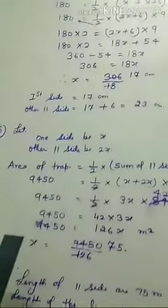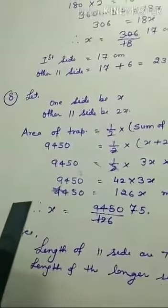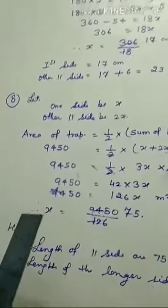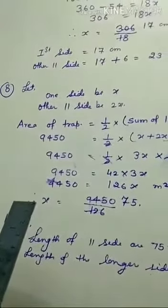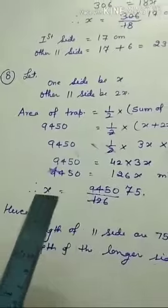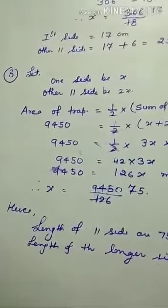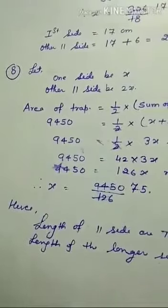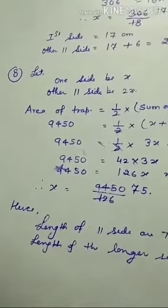Question number 8: In a trapezoid field, one of the parallel sides is twice the other. The area of the field is 9450 and the perpendicular distance between the two parallel sides is 84 meters. Find the length of the longer parallel side.